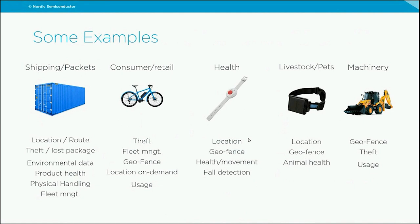With cellular you can track people's location, ensure they reside in the area they're supposed to be, add sensors to control their health and movement, do fall detection, and handle other things — all without relying on the person being indoors or close to a cell phone or an expensive gateway. For livestock and pets, you can control location, use geofences, and monitor animal health — for example, if animals stop moving, you can quickly check that everything is okay.